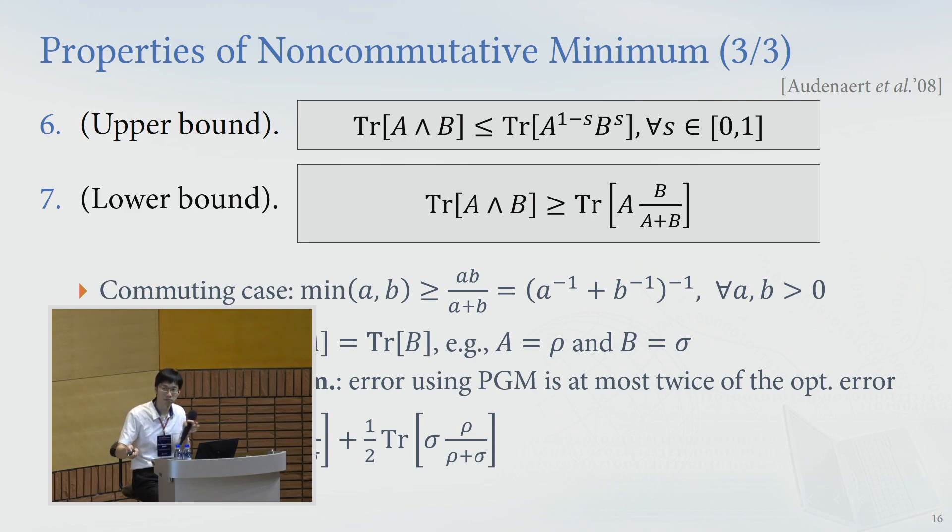And by the second property, the trace is equal to this rho times sigma over rho plus sigma, which is exactly smaller than two times the optimal error, where the optimal error is the non-commutative minimum between rho and sigma, and this one-half is the equal uniform prior probability for rho and sigma.